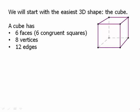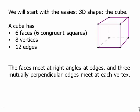and it has twelve line segment edges: four at the top, four going up and down, and four at the bottom, for twelve altogether. The faces meet at right angles at the edges, and three mutually perpendicular edges meet at each vertex. That defines a cube.